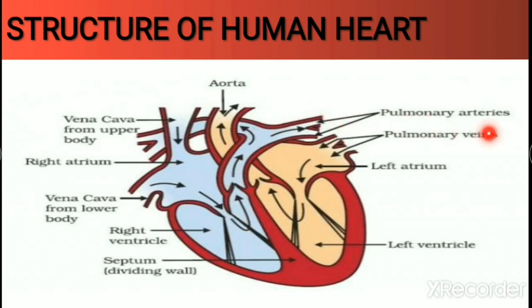Two more valves are present at the base of the vessels. The pulmonary valve is at the base of the pulmonary artery, which takes impure blood to the lungs for purification. The aortic valve is at the base of the aorta — the largest artery of our body — which transports pure blood to all parts of the body. So we have discussed all four valves.